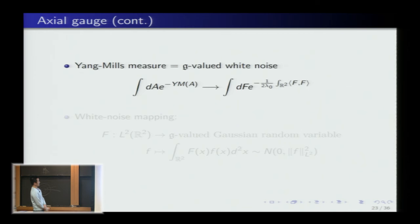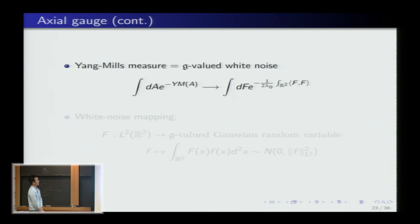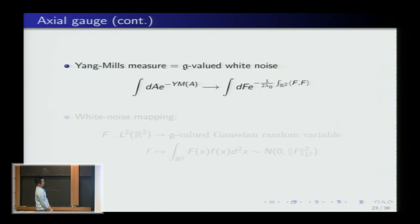Moreover, in axial gauge the curvature and connection become equivalent variables: F = D₁A₀. If you give me the connection, I know the curvature. By the Fundamental Theorem of Calculus, if you give me the curvature, I can recover A₀ by integrating along the y-direction with the boundary condition. So the Yang-Mills measure can be rewritten as an integral over F as the independent variable — and probabilists recognize this as white noise: a Gaussian at every point in spacetime.